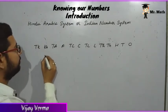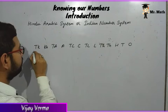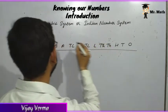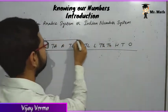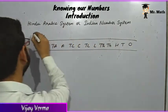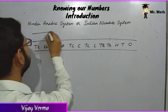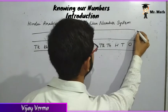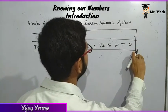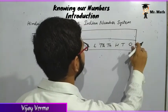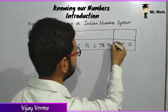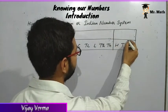Now we can write the periods. First we will make a table. The first period has three place values: ones, tens, and hundreds.